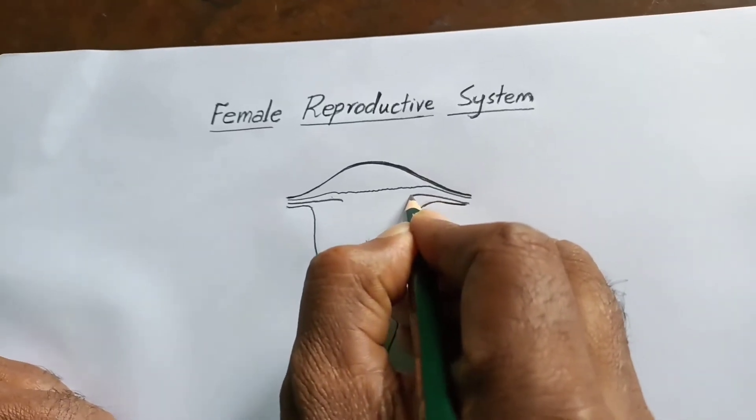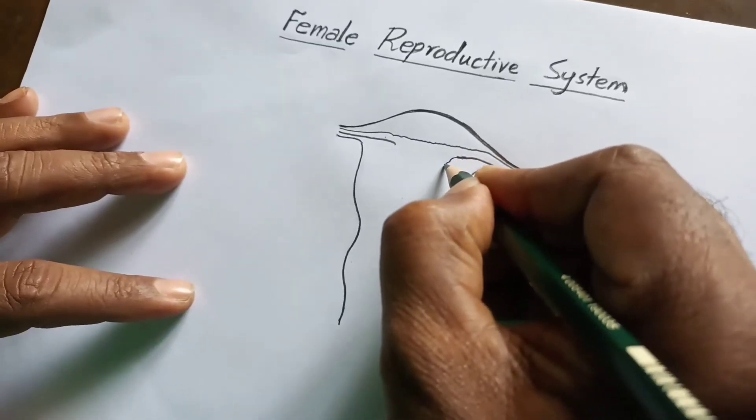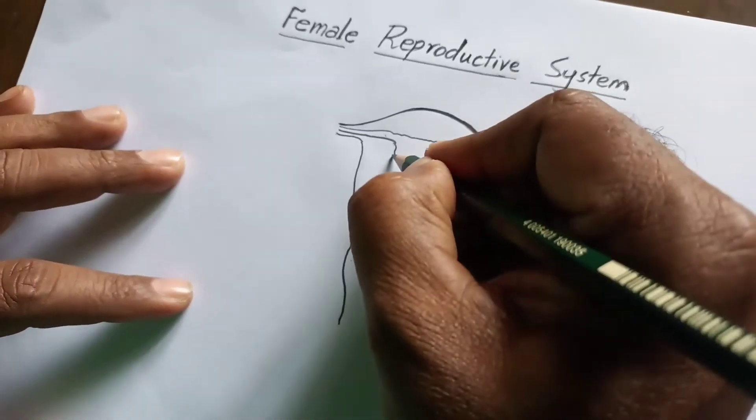You draw like this. I'm drawing the inner wall of the uterine endometrium.